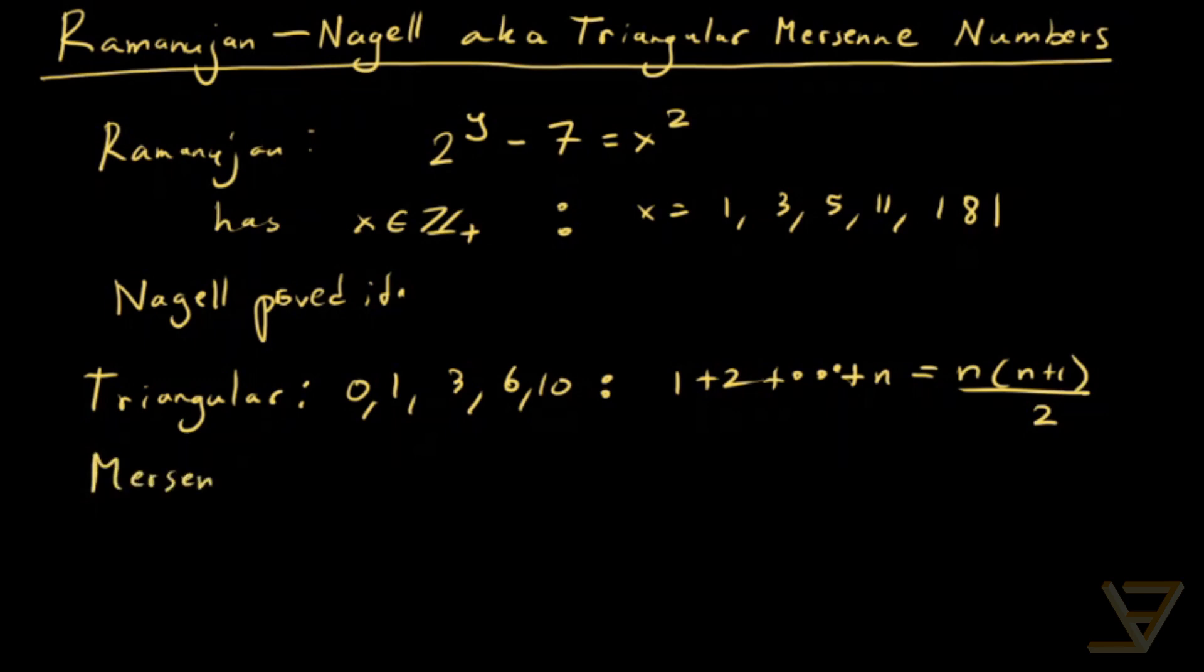A Mersenne number is of the form 2 to the power of m minus 1 for an integer m greater than or equal to 0.